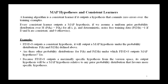Consider for example the concept learning algorithm Find-S, which I discussed in a previous chapter. Find-S searches the hypothesis space H from specific to general hypotheses. Find-S outputs a maximally specific consistent hypothesis, so it will always output a MAP hypothesis under the probability distributions p(h) and p(D|h) which were defined previously. Of course, Find-S does not explicitly manipulate the probabilities at all — it simply outputs a maximally specific member of the version space.